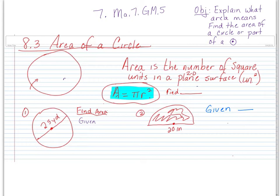Area is the number of square units inside a 2D plane surface. Area is the amount of space inside an object.